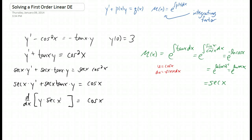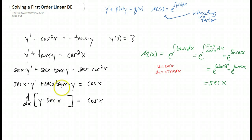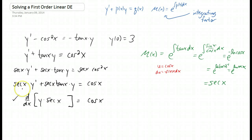You're at a point here where if you've made a mistake, you should know, because this derivative should work out to be the line right above it. If you try to take this derivative, you write down y times the derivative of secant x. The derivative of secant x, if you don't remember, is secant tangent — you can figure that out with the quotient rule. Plus the second term: secant of x times the derivative of y, which is y prime. So this actually checks out, and that's a check we should make every time we do one of these problems.